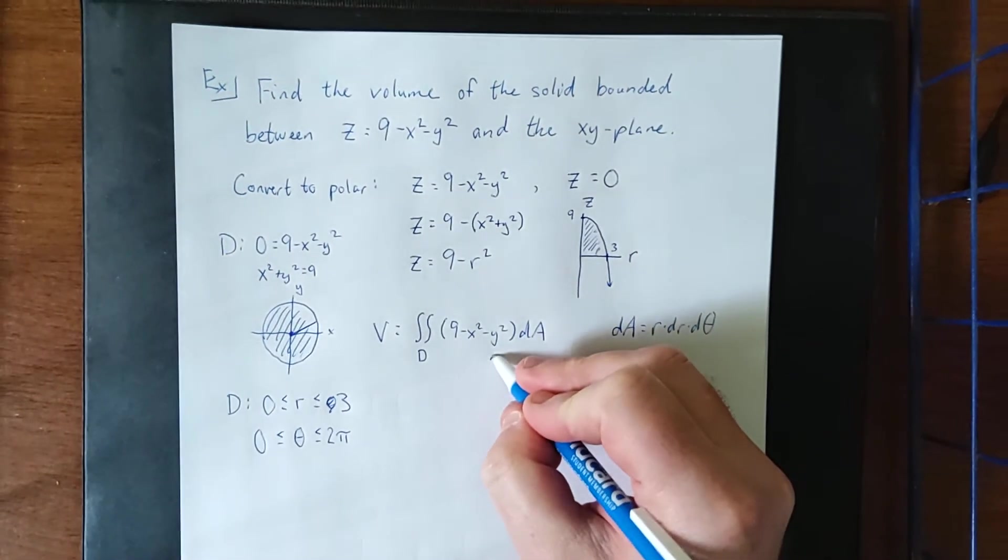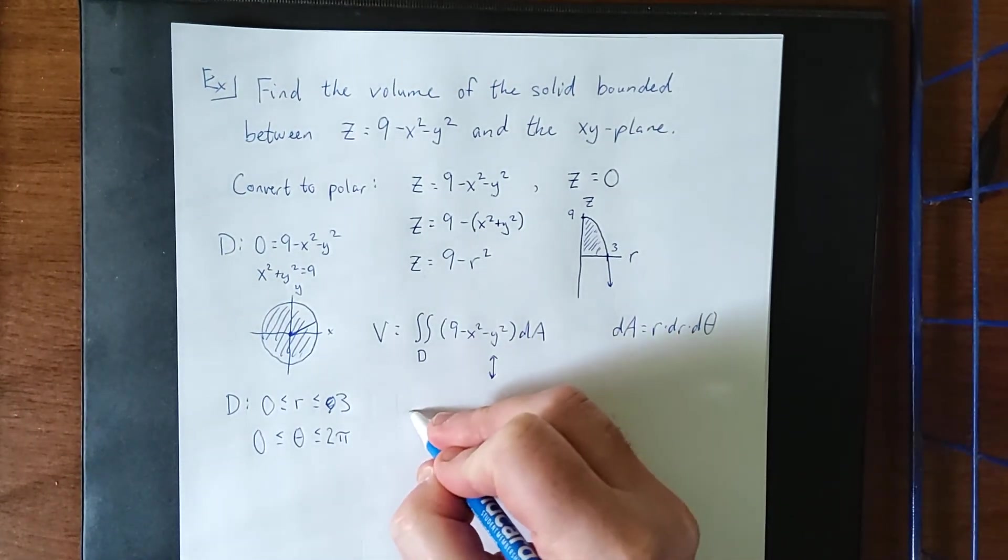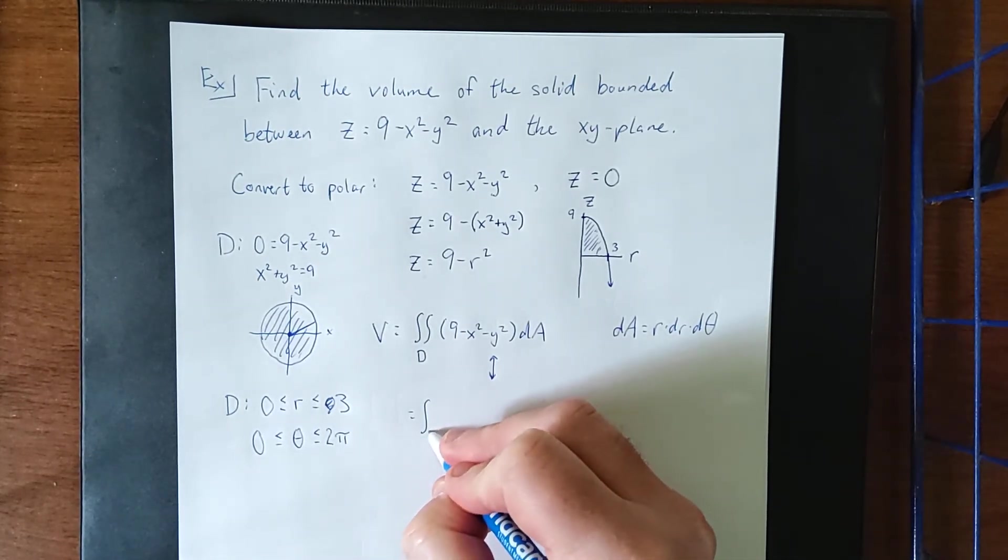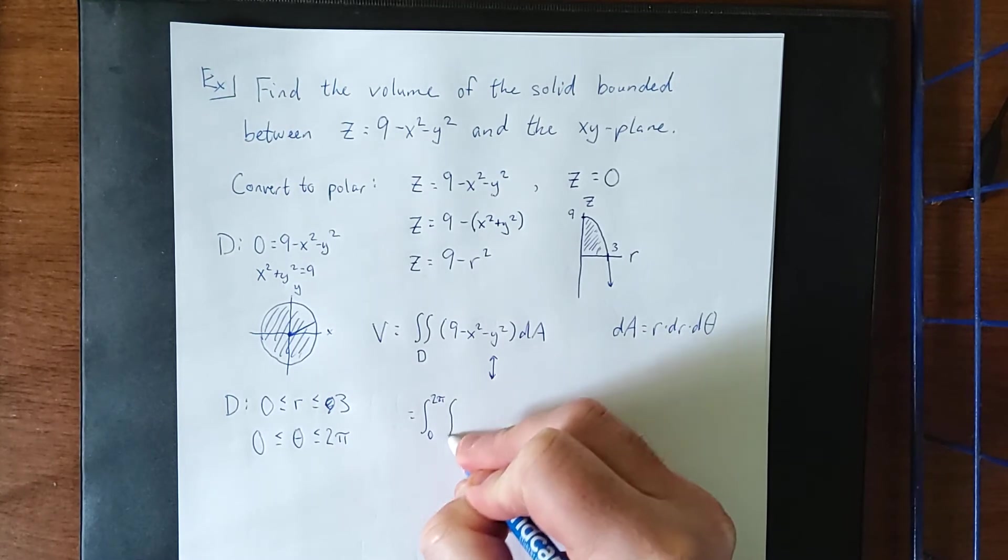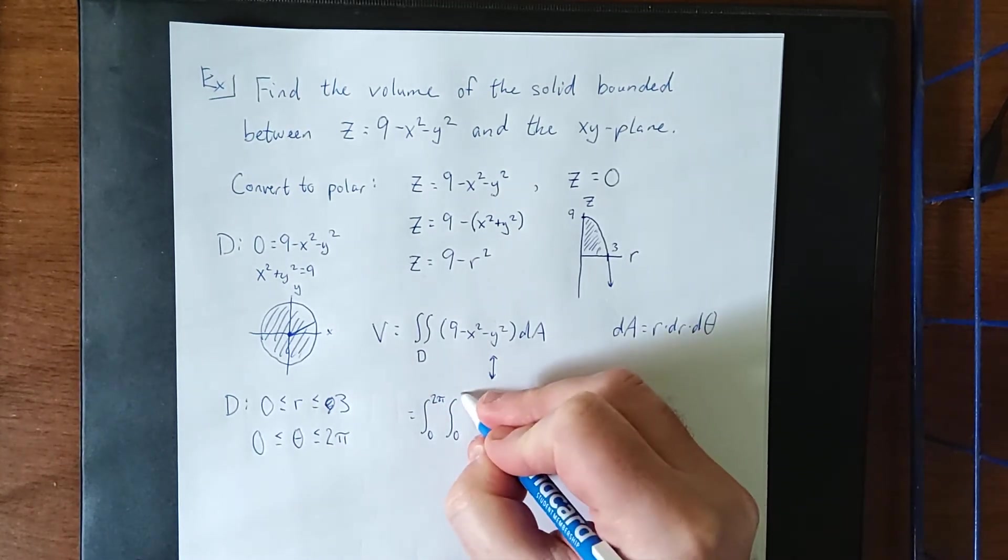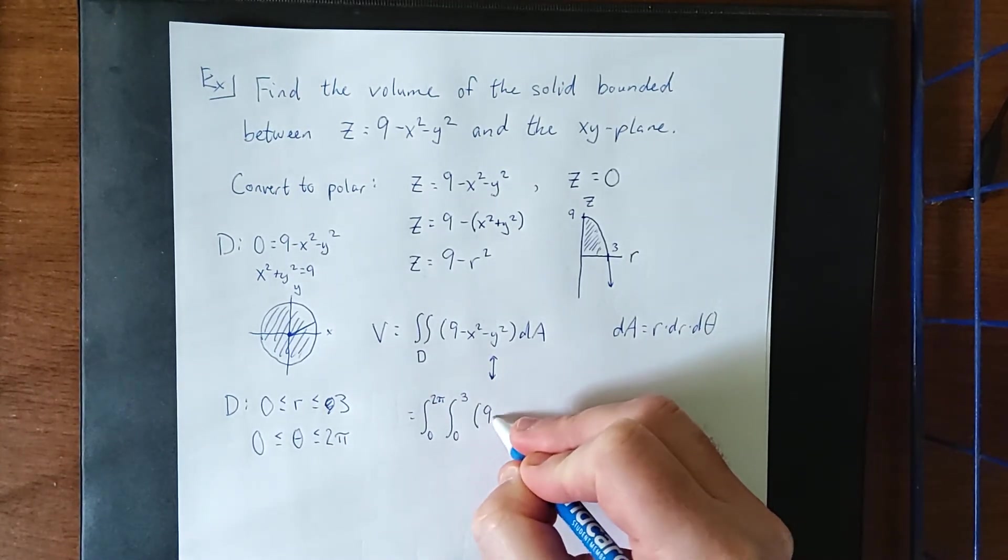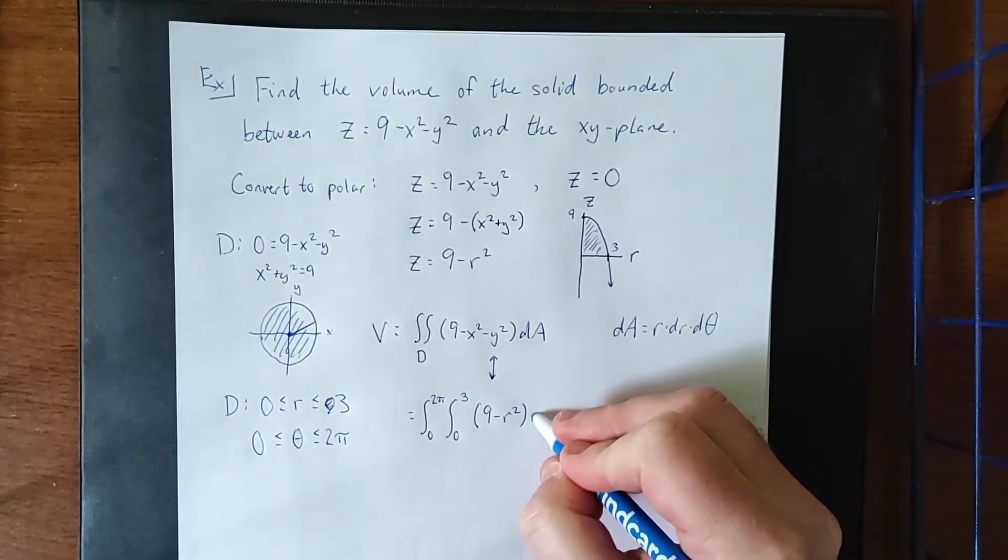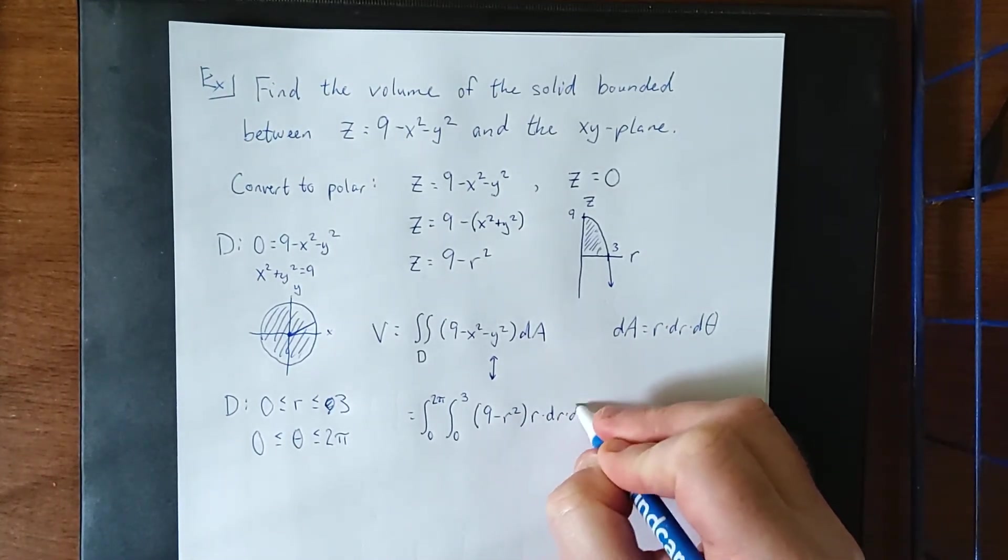Which means that we can convert this double integral into the following. The integral from 0 to 2 pi, and the integral from 0 to 3. The integrand becomes 9 minus r squared, and the differential dA becomes r times dr times d theta.